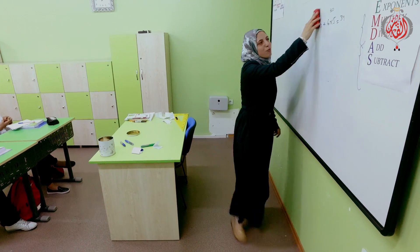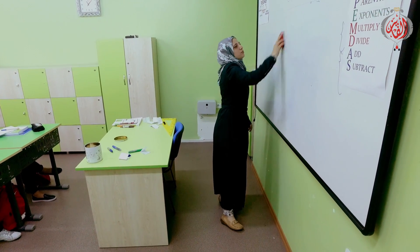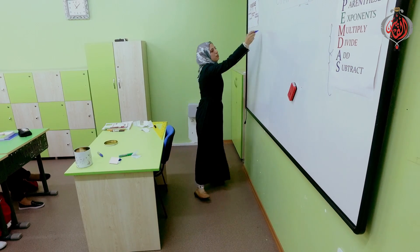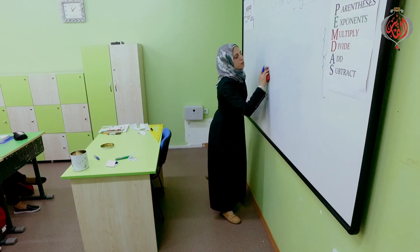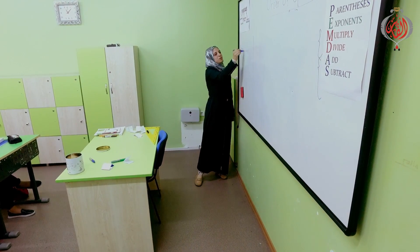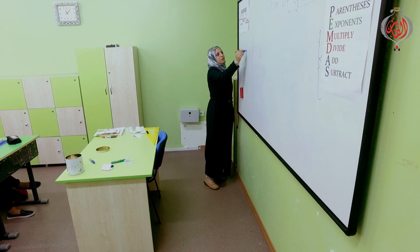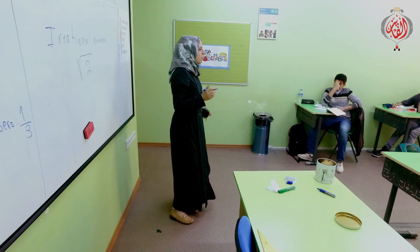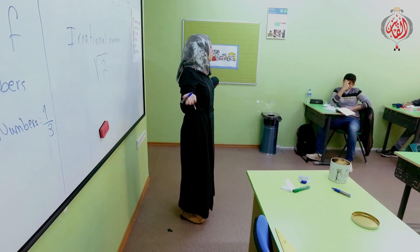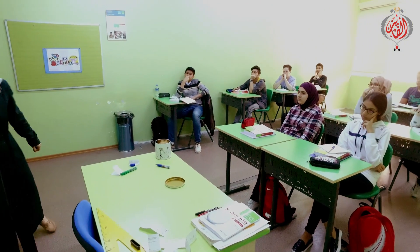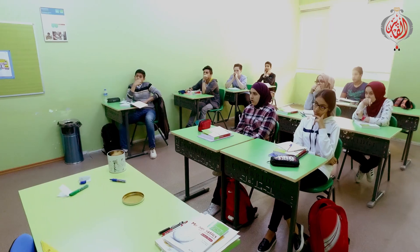So now we talk about groups of numbers. We talk about groups of numbers. Very rational number. Why is it rational? I cannot do that — it's a fraction. So who told me about the right numbers?